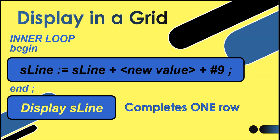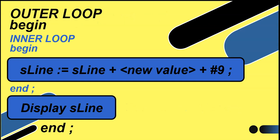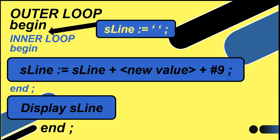That code only does one line of a grid. A grid contains multiple rows, so we're going to take all of that code and place it inside an outer loop to repeat it however many rows we want. Remember that the initialization of sline should happen inside the outer loop, so that when it starts a new row it resets to nothing. We don't want the new line to contain everything from the previous line plus more.